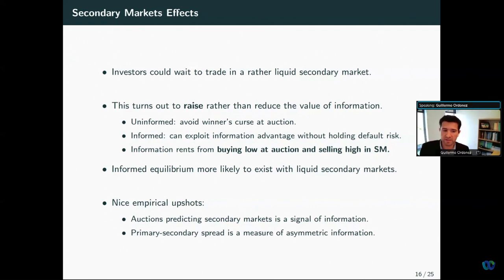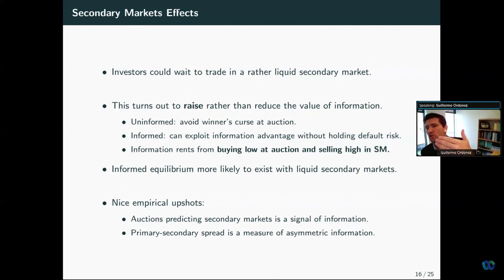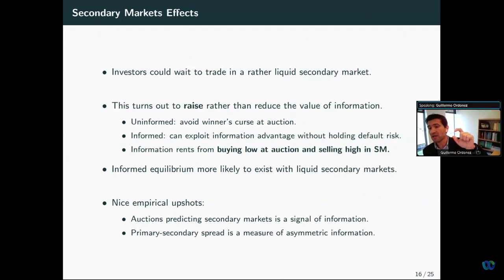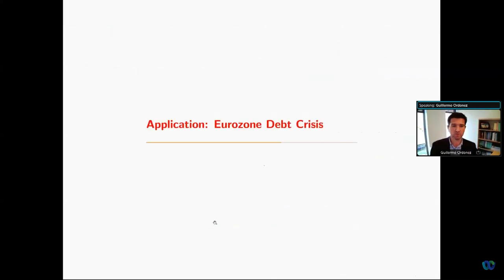This generates two interesting empirical implications. First, when there is information in auctions, it should show up predictively in secondary markets. Second, the gains from information from the spread between primary and secondary markets widen when there is more information acquisition. We're going to take these implications to the data.